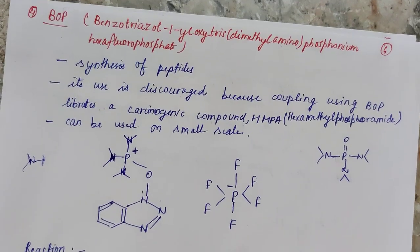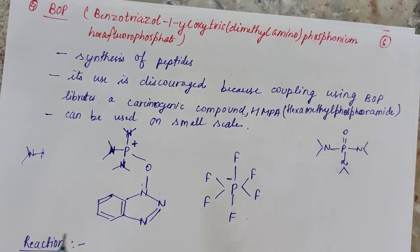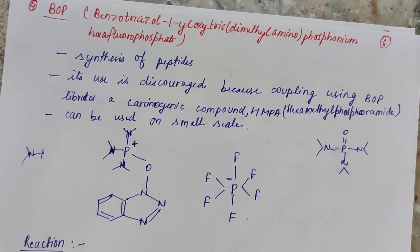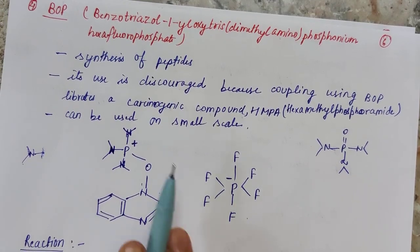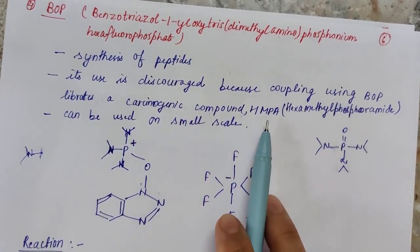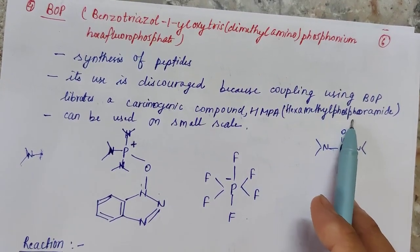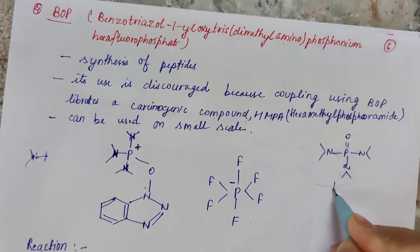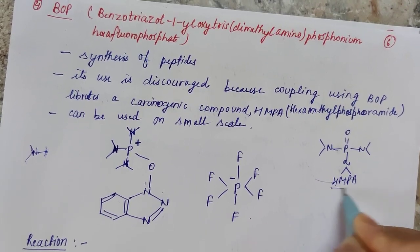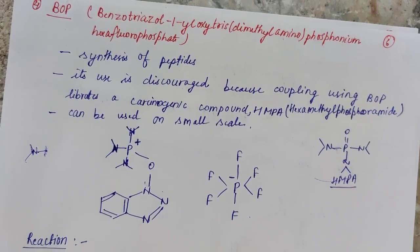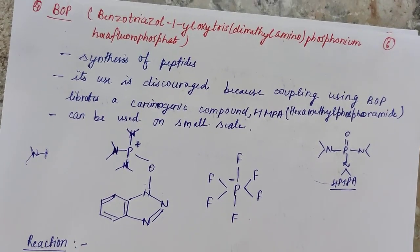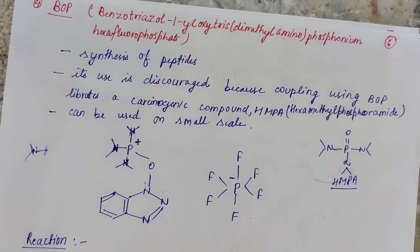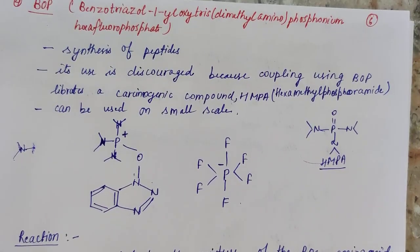BOP is used in peptide synthesis, but its use is discouraged — especially on commercial scale — because during the reaction it releases a carcinogenic compound: HMPA (hexamethylphosphoramide). However, it can be used on a small laboratory scale for peptide preparation.